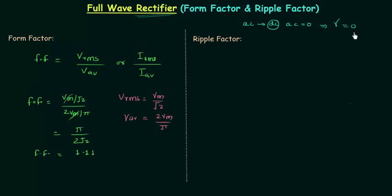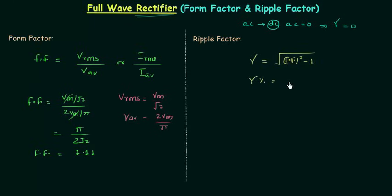I have already explained the definition, significance, and derivation of ripple factor in the half wave rectifier lecture. If you don't know these things, you may watch that lecture. Ripple factor is equal to the square root of form factor squared minus 1, and the percentage ripple factor is equal to the square root of